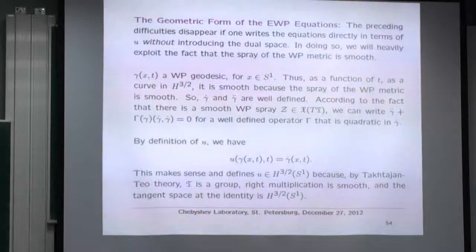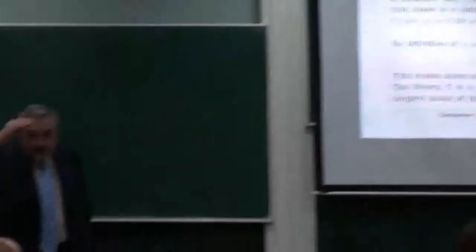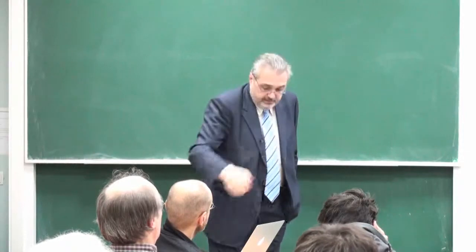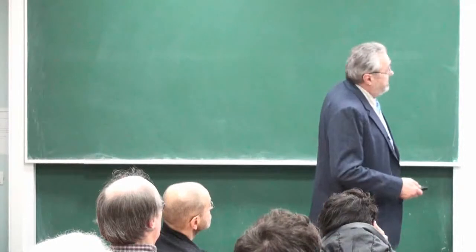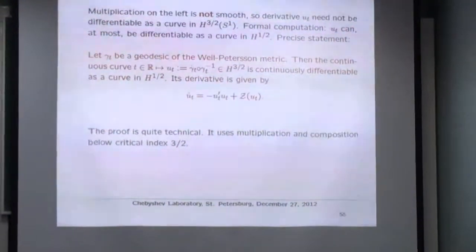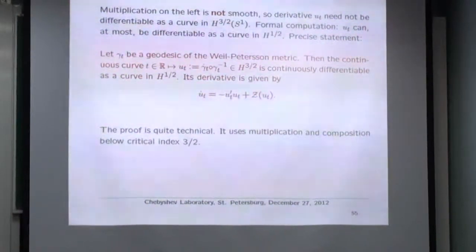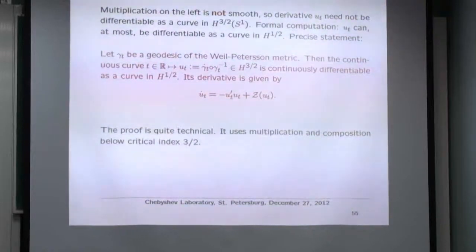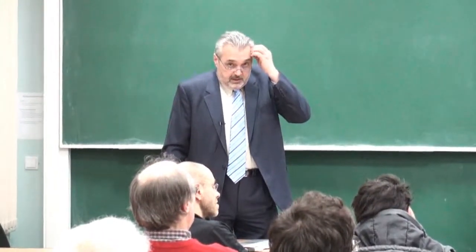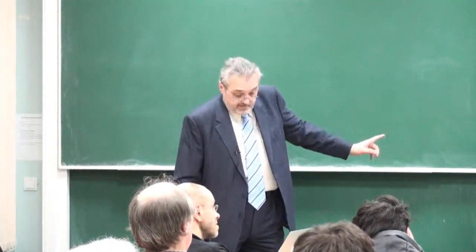If I am working in the material or Lagrangian representation, everything is fine. But going to the spatial representation, there are big problems. Here is a theorem: let γ(t) be a geodesic of the Weil-Petersson metric. Then the continuous curve γ̇∘γ⁻¹ in H^{3/2} is continuously differentiable as a curve in H^{1/2}, and this derivative is given by a specific expression involving the geodesic spray. So there is a form of the spatial Euler-Weil-Petersson equation, but it involves the geodesic spray. If there is additional regularity, those equations do make sense.